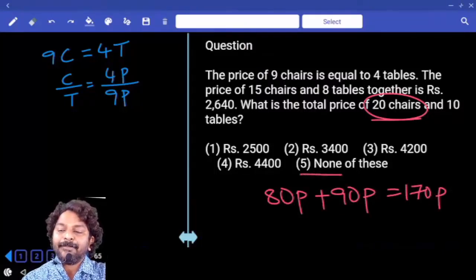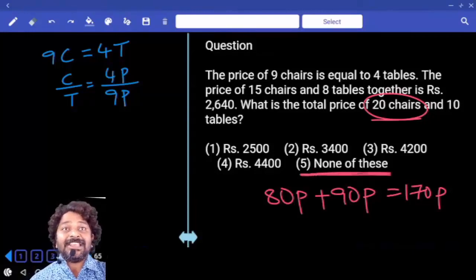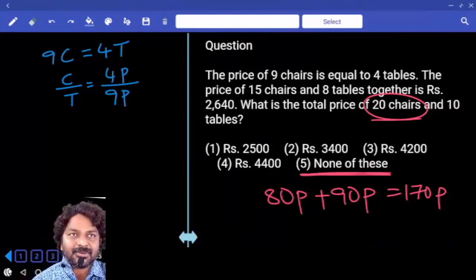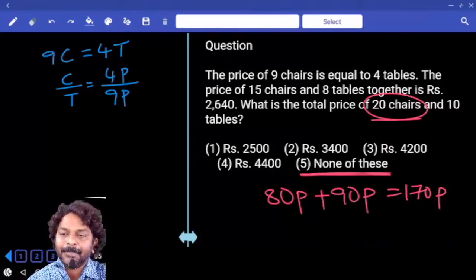In place of 5th option, if there is any number, you can go and verify 17 multiple. Because none of these you cannot verify multiplication rule. So we have to calculate. Understood? Right.